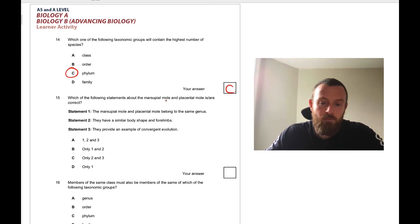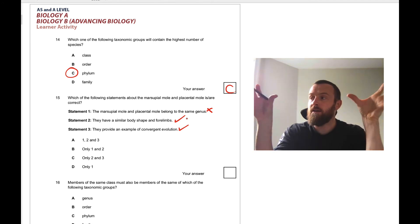Which of the following statements about the marsupial mole and placental mole is or are correct? The marsupial mole and placental mole belong to the same genus? No, they are very distantly related because one's a marsupial and one is a placental mammal. They're separated in evolutionary time for a long time. But they do have a similar shape body and forelimbs. Because of this, this is an example of convergent evolution. Two distantly related organisms both adapting and undergoing natural selection to shape the body to the same ecological niche. They both dig underground, one in Australia, one in Europe. So two and three are correct, therefore it is C.